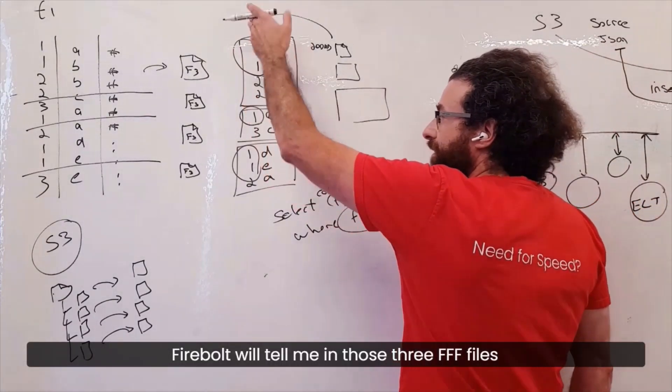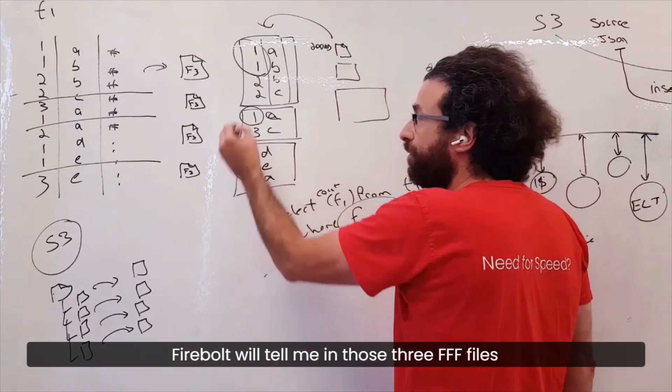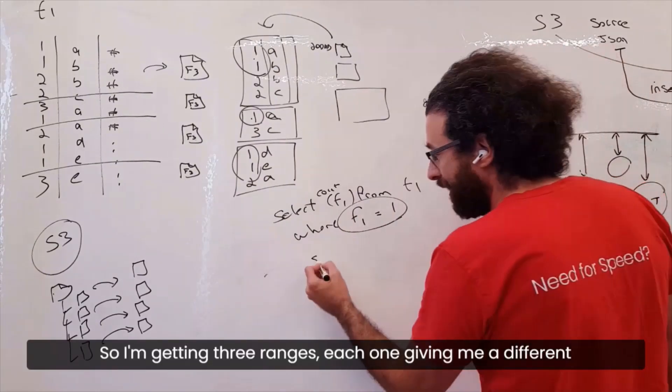Firebolt will tell me in those three FFF files, those would be the ranges of one. So I'm getting three ranges,